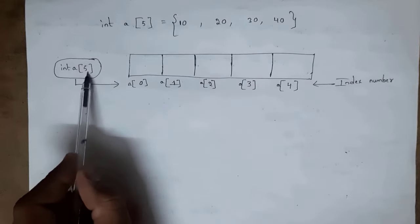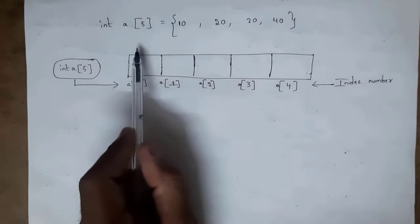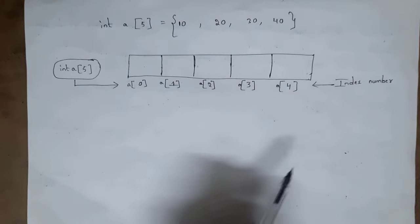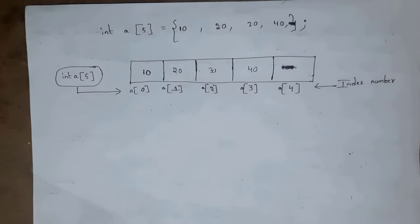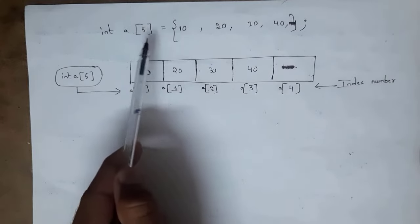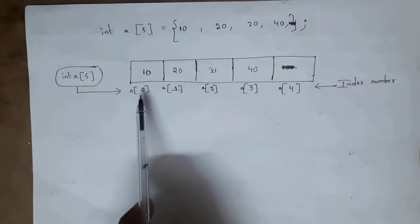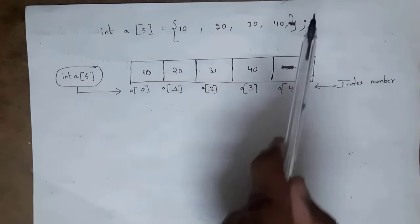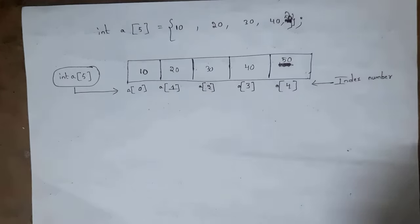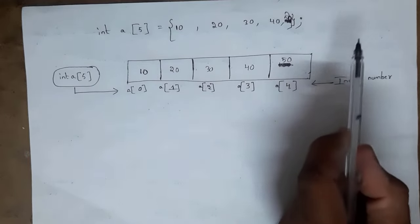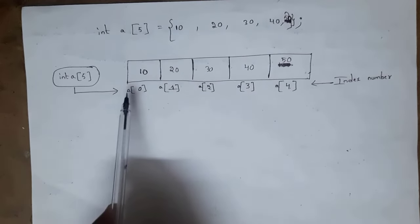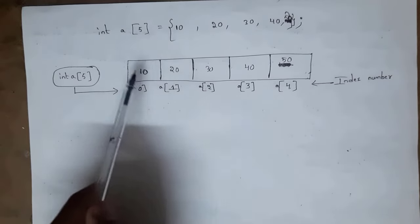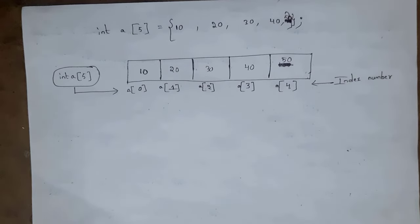Here I took int a[5], meaning size is 5. The array will create 5 memory locations. You need to remember one important thing: index numbers always start with 0, not 1. For example, value 10 is stored at index 0, value 20 at index 1, 30 at index 2, 40 at index 3. If I also declare 50, it is stored at index 4. So 5 values are stored in index numbers 0 through 4.